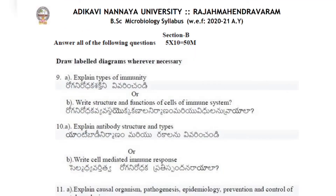Coming to the essays — ninth (a): Explain types of immunity. (Telugu: Rog nirodhaka shakti ni vivari nchandi.) Ninth (b): Write the structure and functions of cells of the immune system. (Telugu: Rog nirodhaka vyavastha yoka lakshanala nirmanam maryu vidhulanu raay andi.) Tenth (a): Explain antibody structures and types. (Telugu: Antibody nirmanam maryu rakalanu vivari nchandi.) Tenth (b): Write cell mediated immune response.